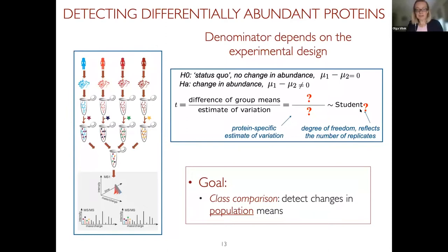Most methods currently used in proteomics are essentially based on this kind of signal-to-noise ratio. What differs between different methods is how we define the signal, how we define the noise, and what are the corresponding degrees of freedom. The challenge when we move from a label-free experiment to a label-based experiment is that we need to characterize the signal, the noise, and the degrees of freedom to determine what is changing between samples.